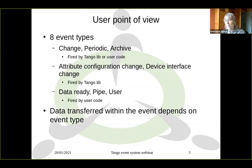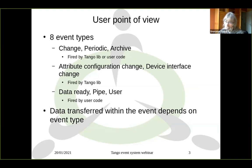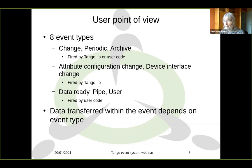From the user point of view, there are different event types. We have eight different event types: the classical change event, periodic event, and archive event. But we also have attribute configuration change, device interface change, data ready, pipe event, and user event — which makes eight different event types.